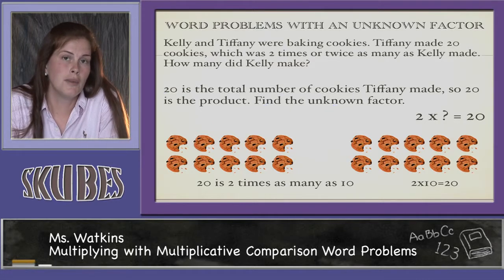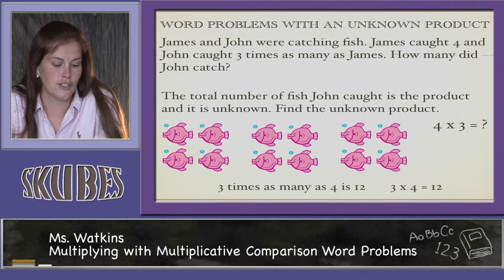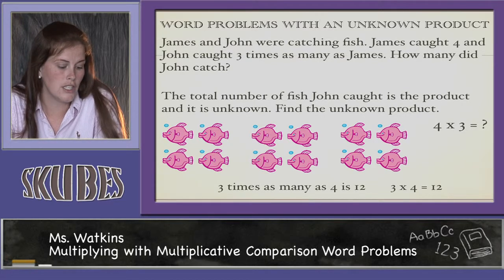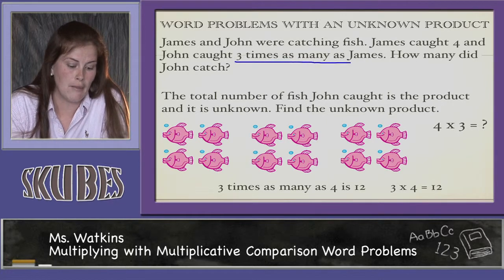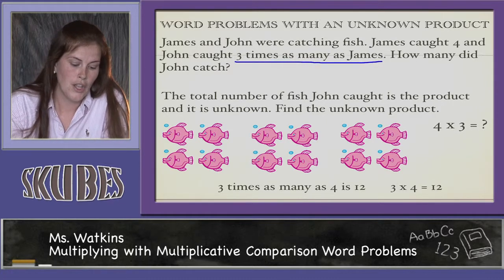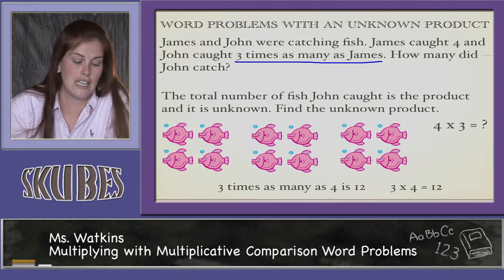There could also be word problems with an unknown product. James and John were catching fish. James caught 4 and John caught 3 times as many as James. How many did John catch? Well, the total number of fish John caught is the product and it is unknown.